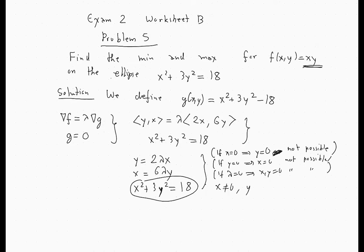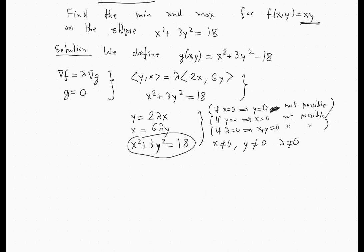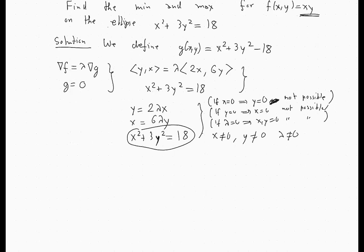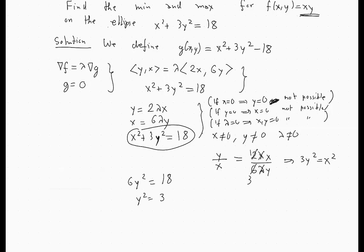And the reason why I like this a lot is because it allows us to divide the first and the second equation. So we cannot just divide if we do not have an assurance that the quantities involved are non-zero. So when you divide, there are nice cancellations here and eventually you get 3y² = x². Which now you can plug into the constraint and that will give you 6y² = 18, which means that y² = 3, which means that y = ±√3.